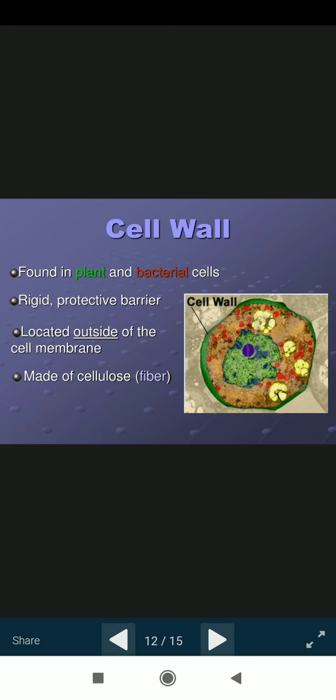Then cell wall. Found in plant and bacterial cells. Rigid protective barrier. Located outside of the cell membrane. The cell wall is also made up of cellulose or fibers.